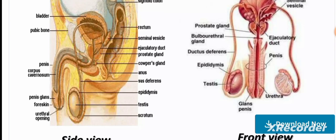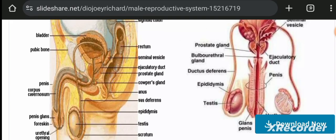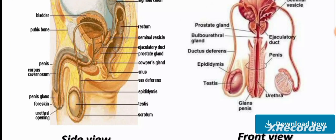The male reproductive system includes the testes, epididymis, vas deferens, corpus glands, prostate gland, ejaculatory ducts, seminal vesicles, rectum, bladder, pubic bone, penis, corpus cavernosum, glans penis, foreskin, and urethral opening.